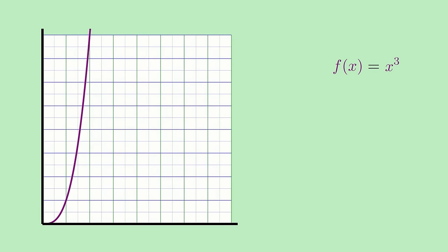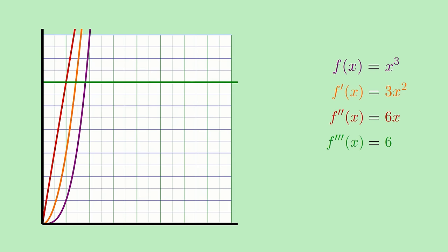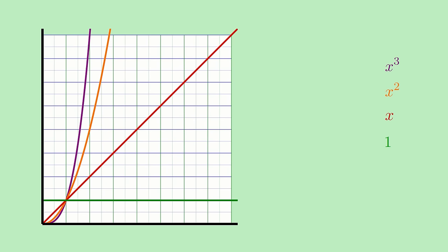Take a look at the function f of x equals x cubed and its first three derivatives. If we ignore the coefficients, you'll notice the nice pattern whereby each derivative reduces the power of the previous function by 1. So x cubed goes to x squared, x squared goes to x to the 1, and x to the 1 goes to the constant 1, which you can think of as x to the 0.